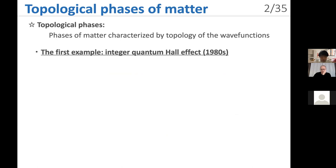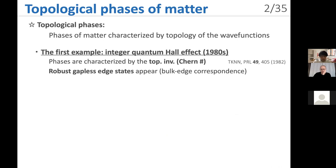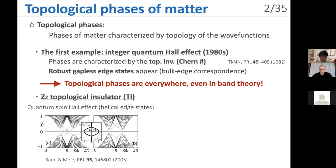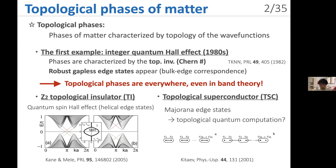The first example of topological phases is found in the integer quantum Hall effect. Distinct phases are characterized by the topological invariant — the Chern number — and correspondingly robust gapless edge states appear. Such topological phases are not confined to quantum Hall insulators but are found everywhere, even in conventional band theory. For example, topological phases are found in time-reversal symmetric insulators, leading to the quantum spin Hall effect, and also in superconductors, where topological phases lead to the emergence of Majorana edge states protected by particle-hole symmetry, which may open the possibility of topological quantum computation.